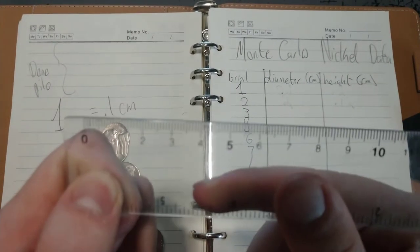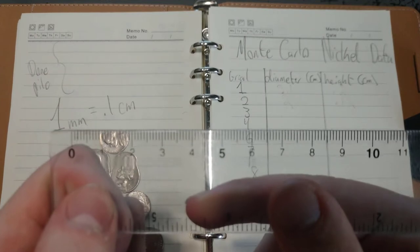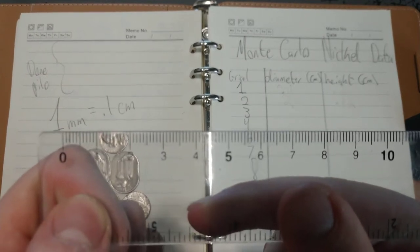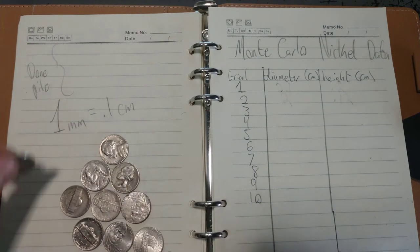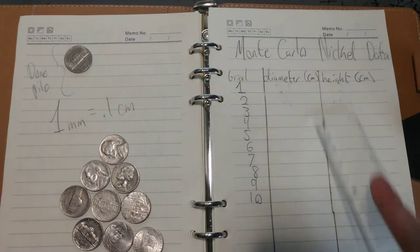If it looks like I'm in between two millimeter spots, I'm going to try to estimate exactly where we are. We're going to do this for 10 of these nickels. They'll get over in our done pile. We'll get all our numbers down.